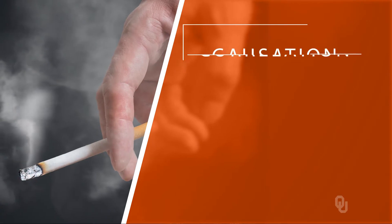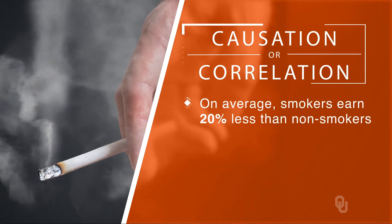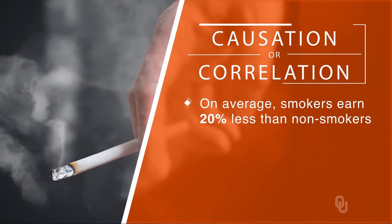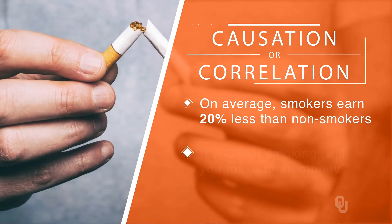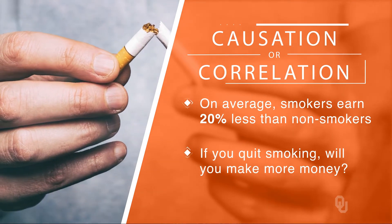But since the treatment — which is being a smoker — was not randomly assigned, we cannot jump from the correlation to a statement that smoking causes people to earn less at work. We want to know what would happen to a person if they stopped smoking, and comparing the wages of smokers and non-smokers is not a good way to get that answer. The reason is selection bias. If getting treatment is correlated with things that also affect the outcome — which is earnings — then the correlation between treatment and outcome is a biased measure of the causal effect of the treatment.